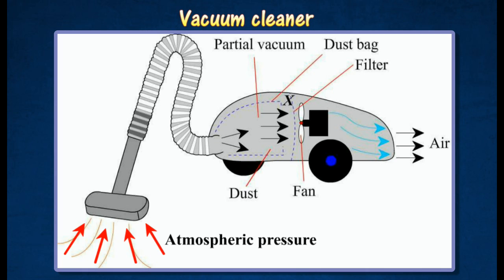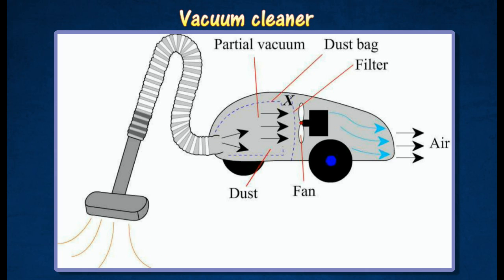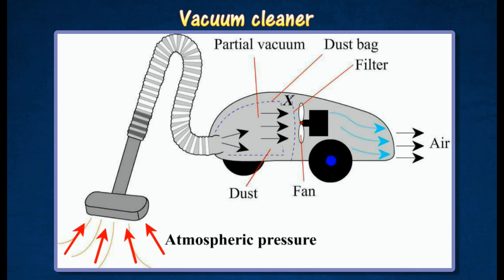The higher atmospheric pressure outside pushes the air and dust particles into the space. The dust particles are trapped in a dust bag at X, while the fast-moving air is allowed to flow out from the back of the vacuum cleaner.